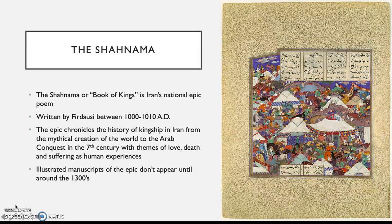The Shahnama, or the Book of Kings, is Iran's national epic poem. It details the history of kingship in Persia, or present-day Iran. It chronicles the human experiences of love, death, and suffering, and the stories of the kings and heroes who predate the introduction of Islam to Persia. The epic covers the ancient history of all the Iranian kings from the creation of the world all the way until the Arab conquest of the 7th century.